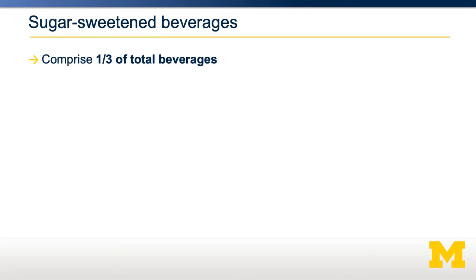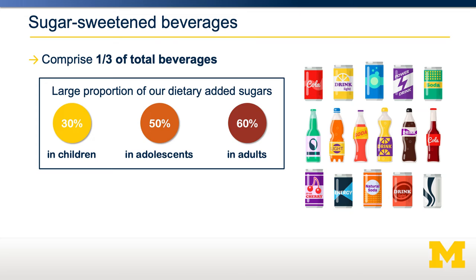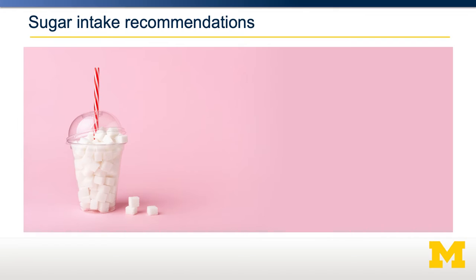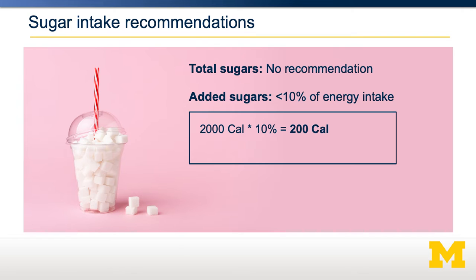Sugar-sweetened beverages comprise about a third of total beverage intake in the United States, including soda, iced tea, and energy drinks. They comprise 50 to 60% of dietary added sugars in adolescents and adults, and have a very low nutrient-to-energy ratio—a lot of calories without essential nutrients. Intake is associated with obesity, diabetes, and liver disease. The recommendation is to limit added sugars to less than 10% of energy intake—for a 2,000 calorie diet, that's less than 50 grams of added sugars per day.